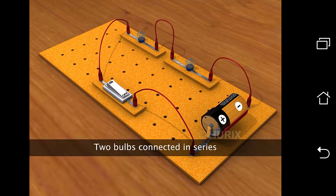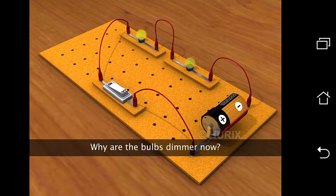Let us connect a second bulb in a series to the same electric cell. Both the bulbs are glowing. But they are dimmer. Why is this so?